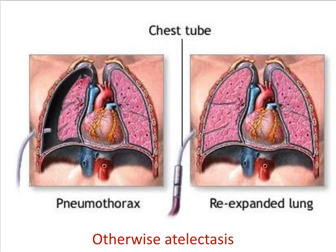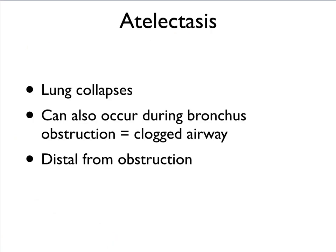So how do you treat a collapsed lung? You want to get the air out from between the membranes. If you can remove the air between the membranes, the two membranes can connect together again and the lung can expand. If that doesn't happen, you get a state known as atelectasis — a collapsed lung that cannot expand anymore.